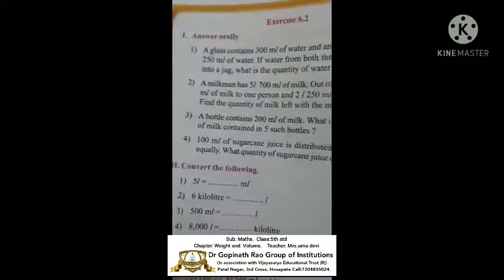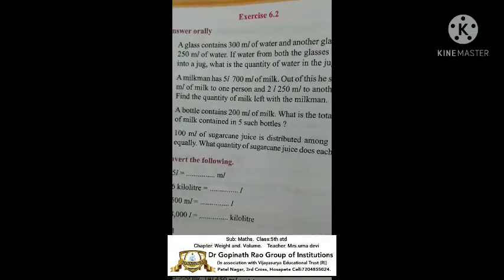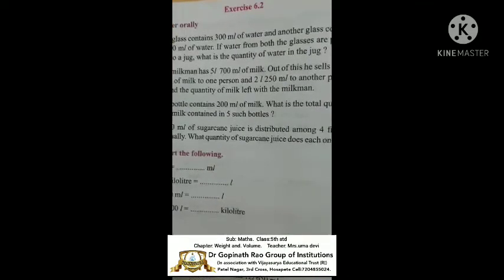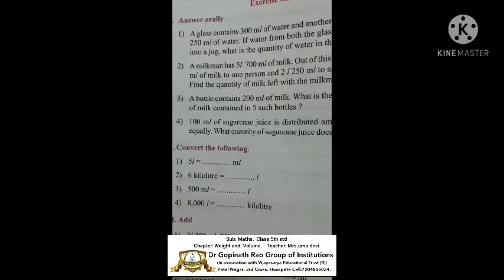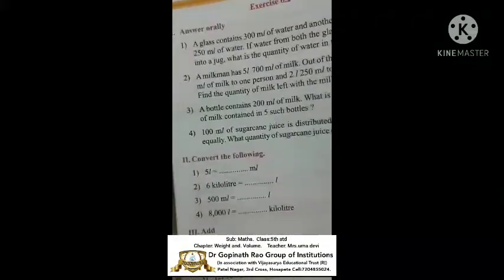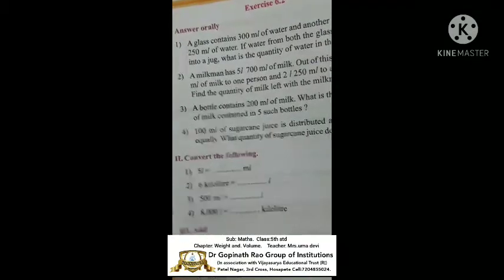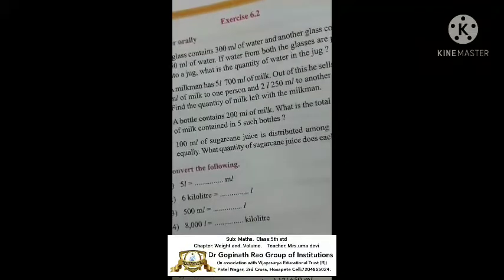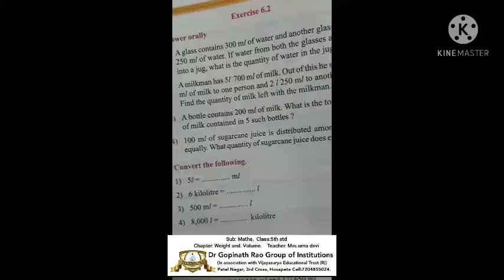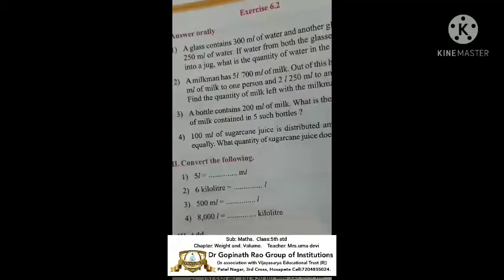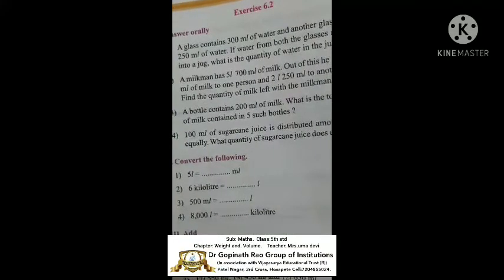Second question: A milkman has 5 litres 700 millilitres of milk. Out of this, he sells 1 litre 350 millilitres of milk to one person and 2 litres 250 millilitres to another person. Find the quantity of milk left with the milkman.